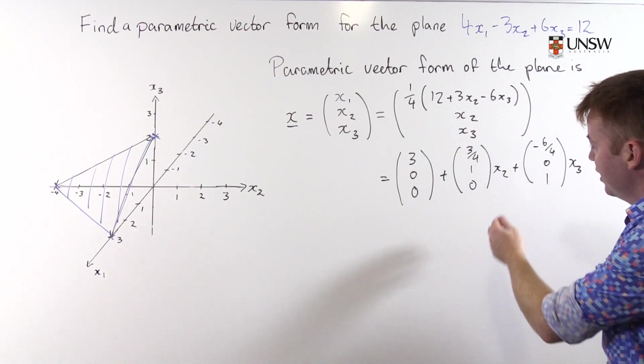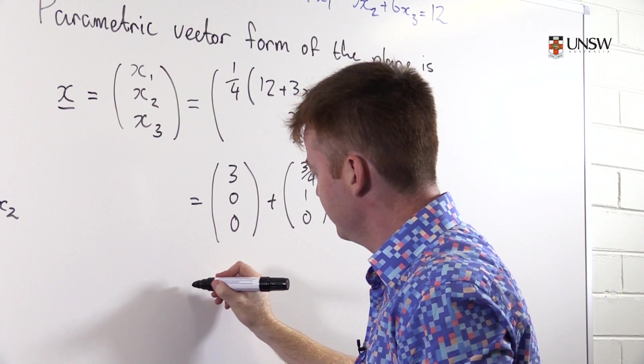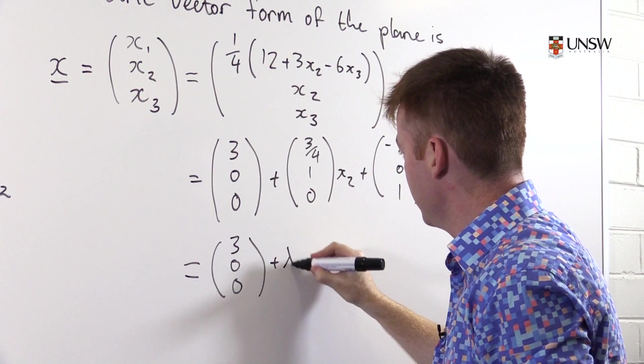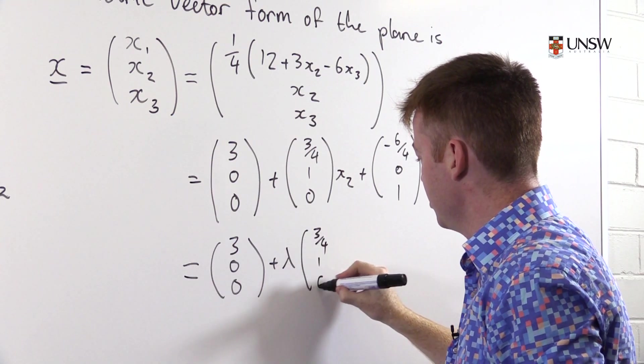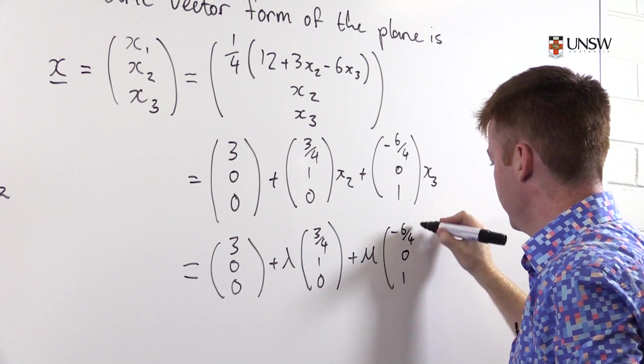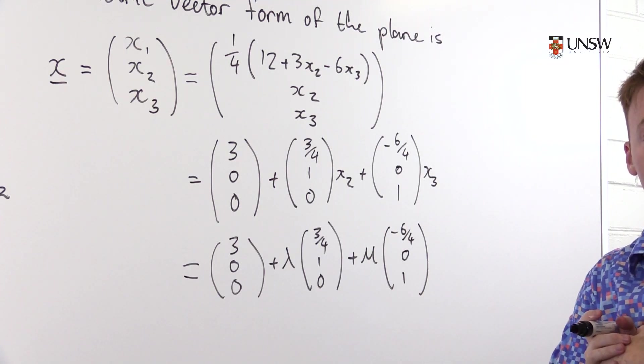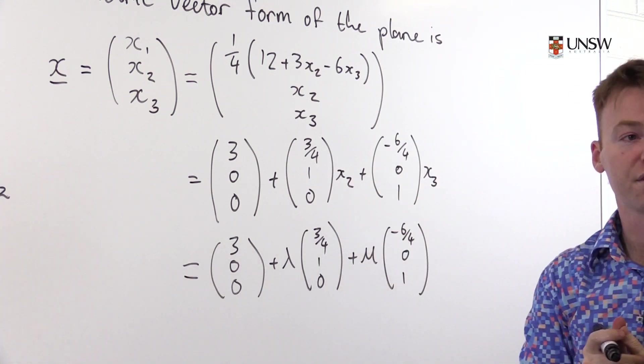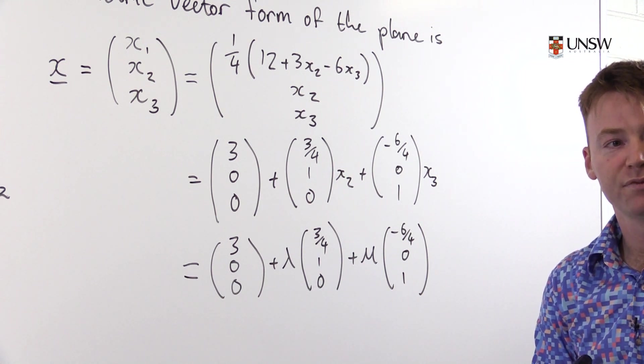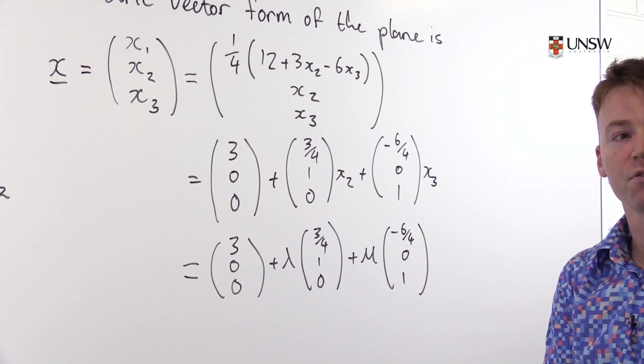And it's more traditional to write λ and μ instead of x₂ and x₃. So I'll rewrite this as equals (3, 0, 0) + λ(3/4, 1, 0) + μ(-6/4, 0, 1). And here we have another parametric vector form of the same plane. It's much more mechanical and straightforward. In fact, you don't have to have any visualisation for what the plane looks like at all to do it this way. So here we have two ways of finding parametric vector form of a plane.